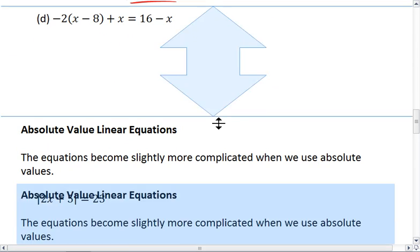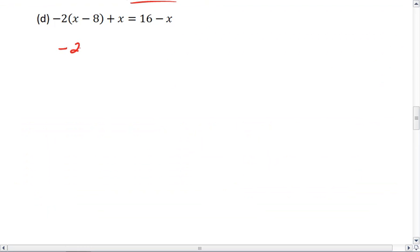Lastly, we have example D. We want to distribute, so we get negative 2x plus 16 plus x equals 16 minus x.